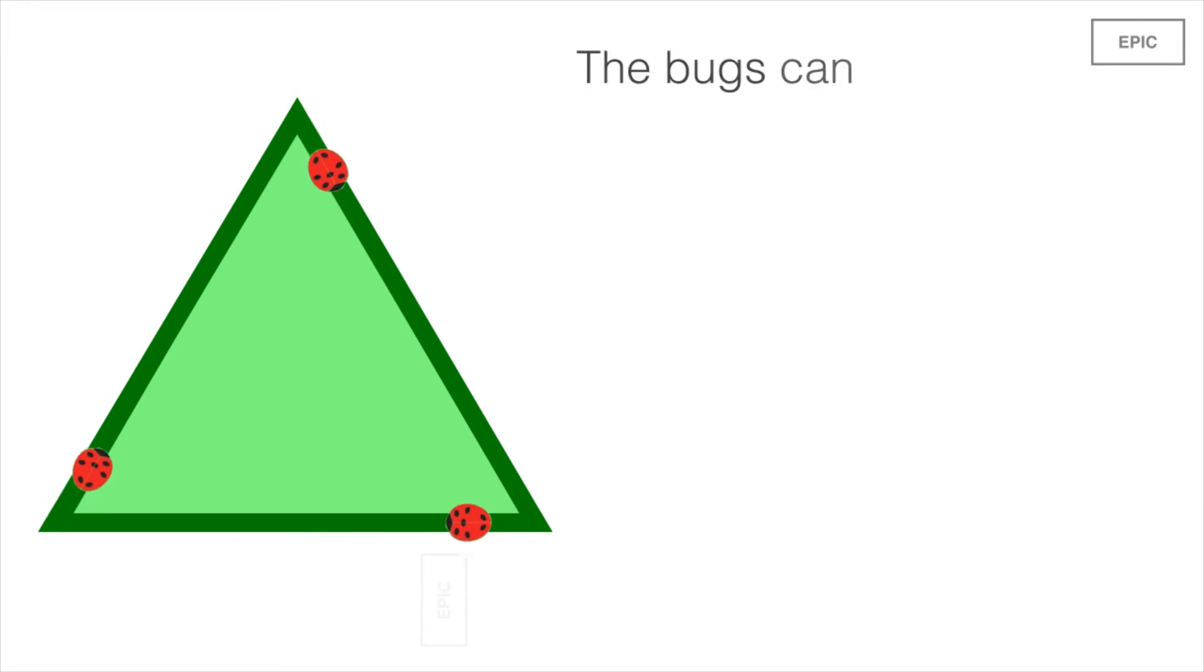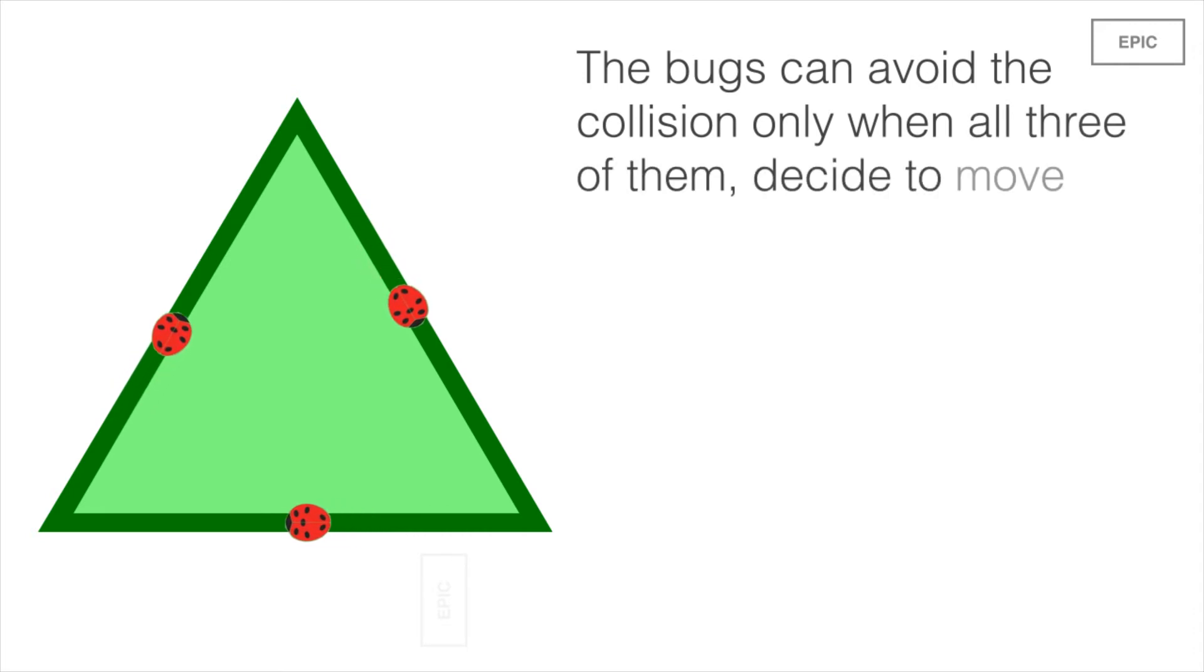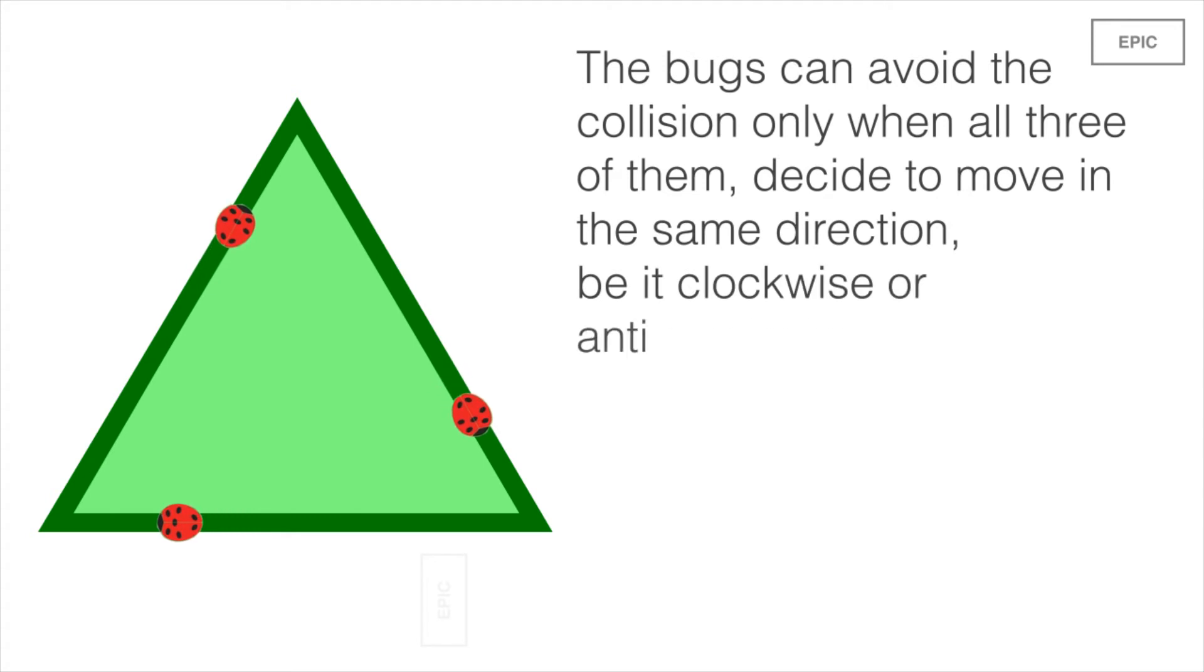Here is a hint. Think of it, the bugs can avoid the collision only when all three of them decide to move in the same direction, be it clockwise or anti-clockwise. What is the probability for that?